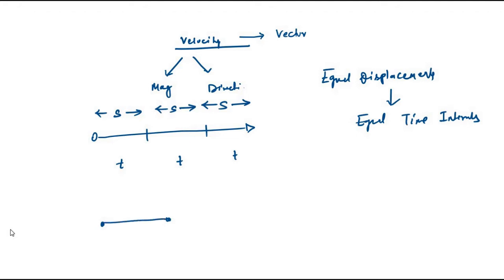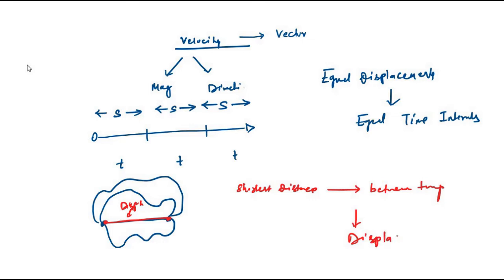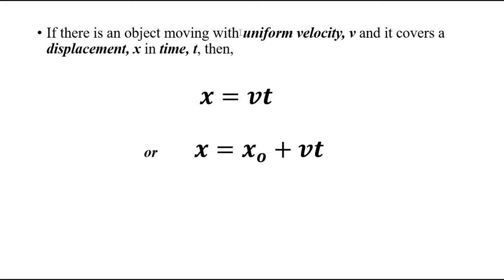Suppose you cover a distance between two points — there are many possible paths, each is a distance. But the shortest distance connecting those two points is what is called displacement. The straight-line distance between two points is displacement. So when an object travels in a straight-line path, the distance it covers equals its displacement. Let us say it moves with uniform velocity v and covers displacement x in time t.